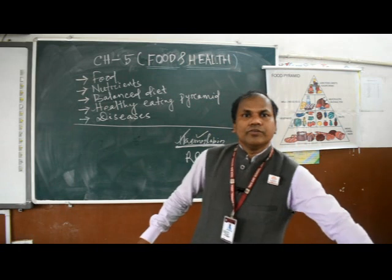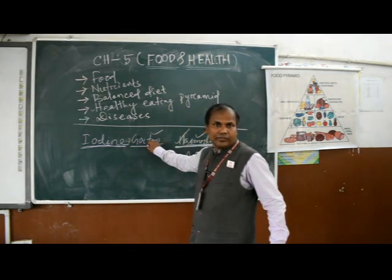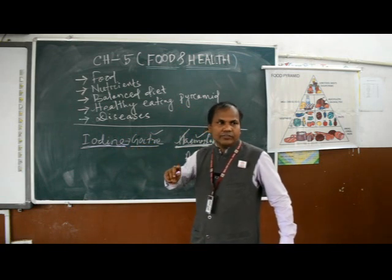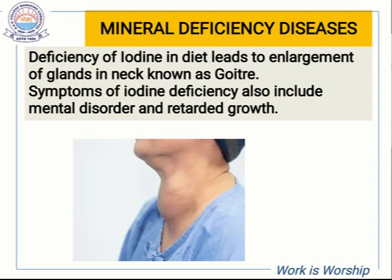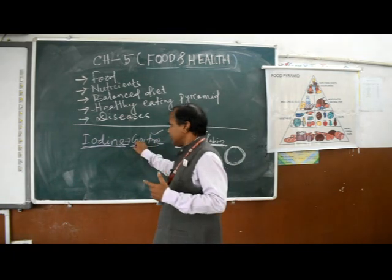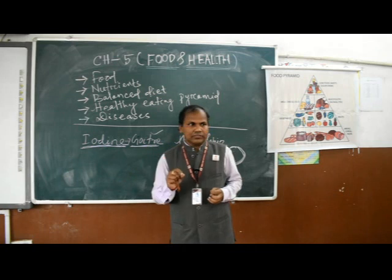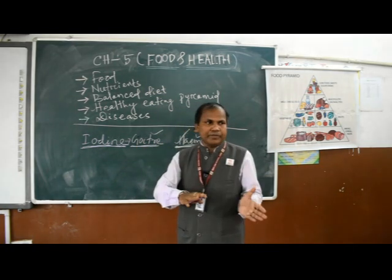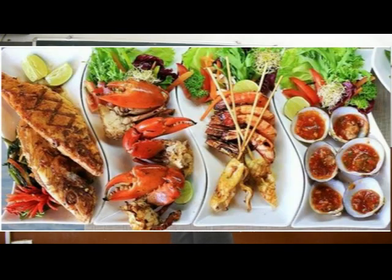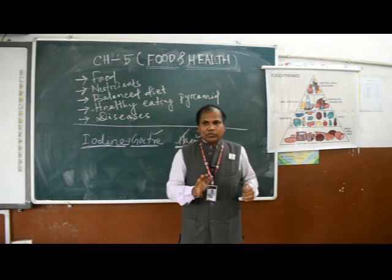Another deficiency disease is due to lack of iodine in the diet, which causes a disease called goiter. Symptoms of goiter include: swelling at the neck region, retarded growth, and mental disorder. If all three symptoms are found in a person, that person is suffering from goiter. To avoid iodine deficiency, take iodized salt in all your food items; also seafood like fish and prawns can help avoid this type of disease.